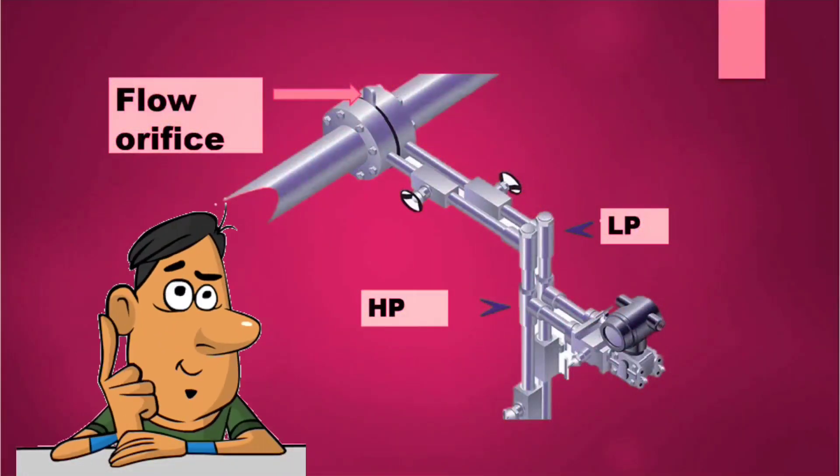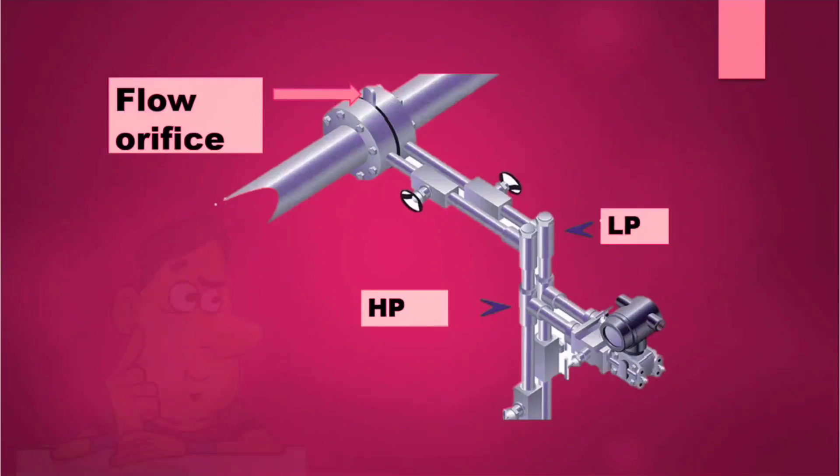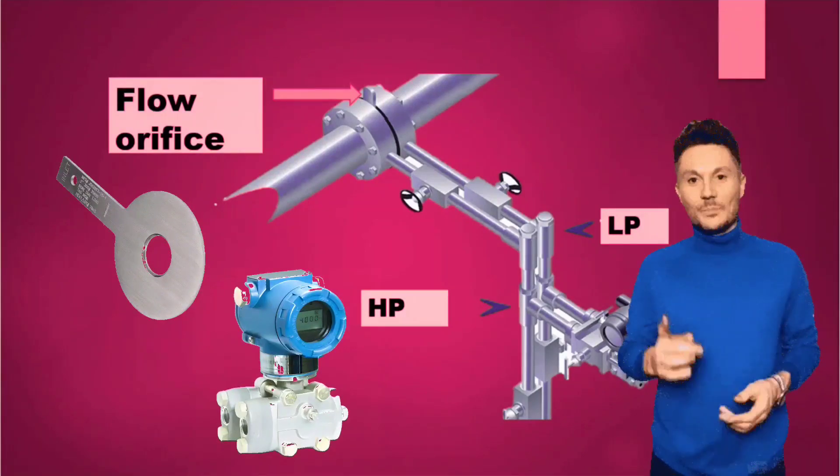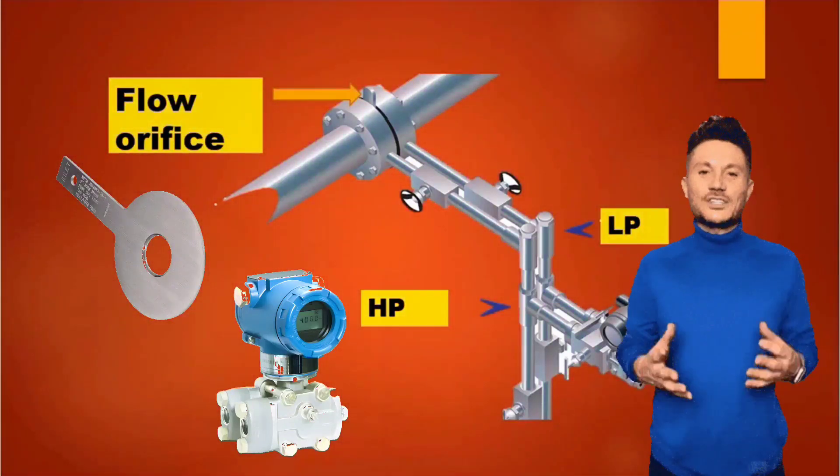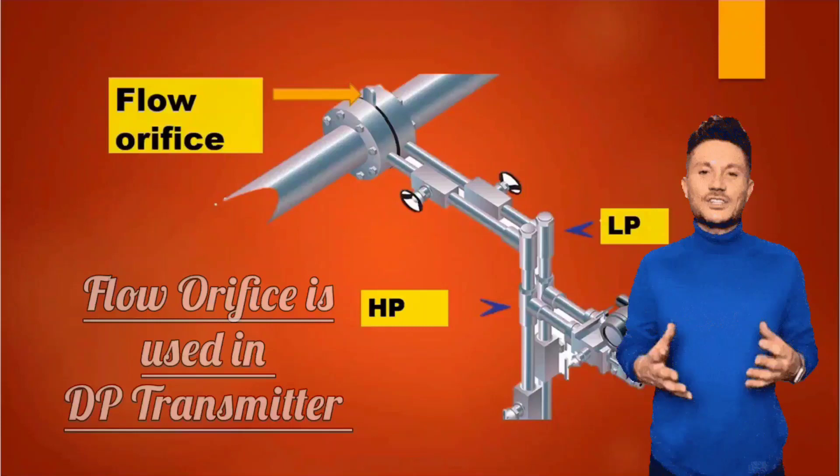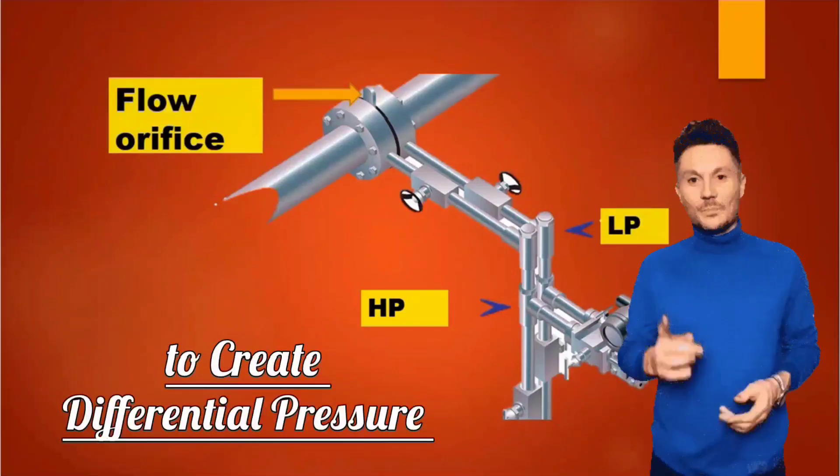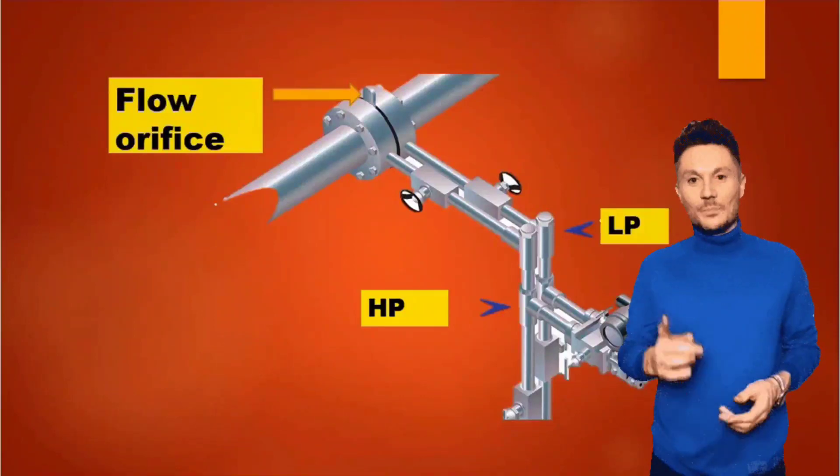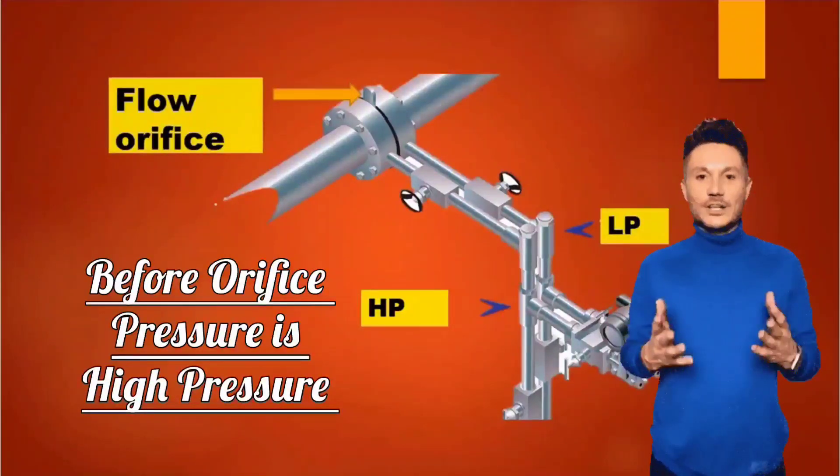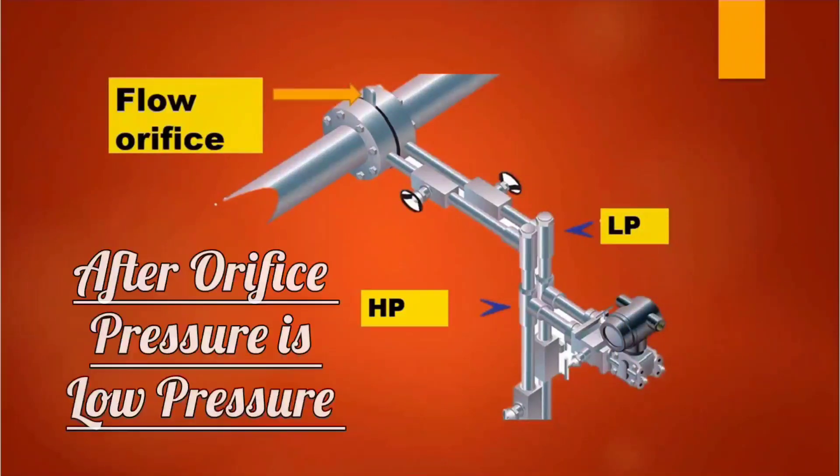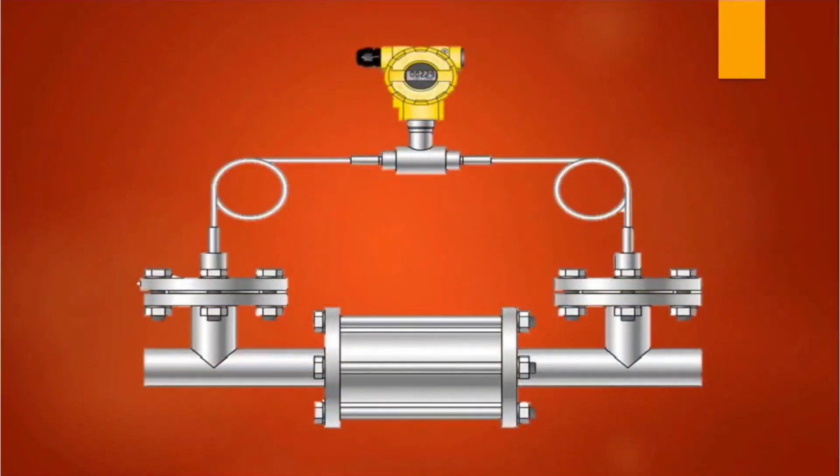Here a question is asked in interviews. Why flow orifice is used in DP-type transmitter? So you reply that flow orifice is used in DP-type transmitter to create differential pressure, means DP. The pressure before the flow orifice is high pressure. When flow orifice is installed, then the pressure after flow orifice becomes low pressure.